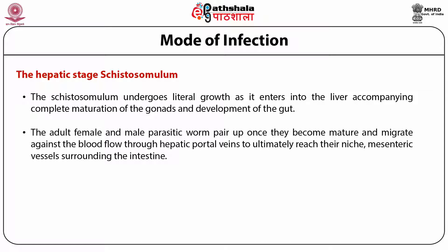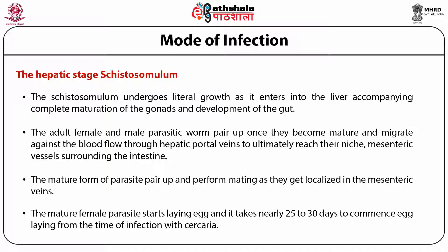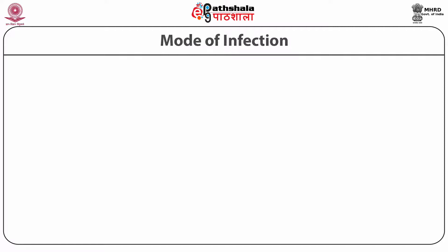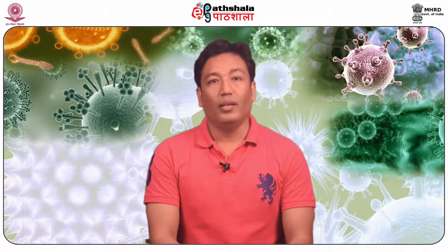The hepatic stage schistosomulum: the schistosomulum undergoes lateral growth as it enters the liver, accompanying complete maturation of the gonads and development of the gut. The adult female and male parasitic worms pair up once they mature and migrate against the blood flow through hepatic portal veins to ultimately reach their niche — the mesenteric vessels surrounding the intestine. The mature form of parasite pairs up and mates as they get localized in the mesenteric veins. The mature female parasite starts laying eggs, and it takes nearly 25 to 30 days to commence egg laying from the time of infection with cercaria.